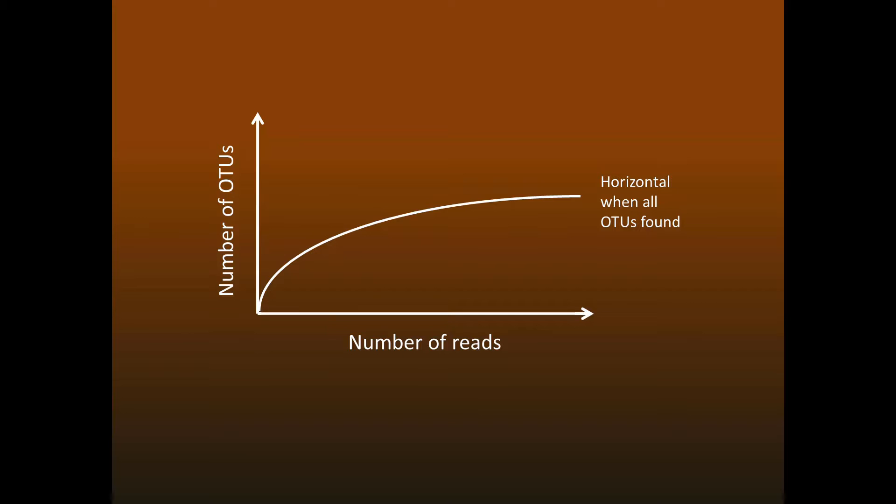However, with next-generation sequencing, we have a big problem with errors, and this gives us two choices. Keep the low-abundance sequences, which may cause many bad OTUs, or discard low-abundance sequences, which may discard many valid species.